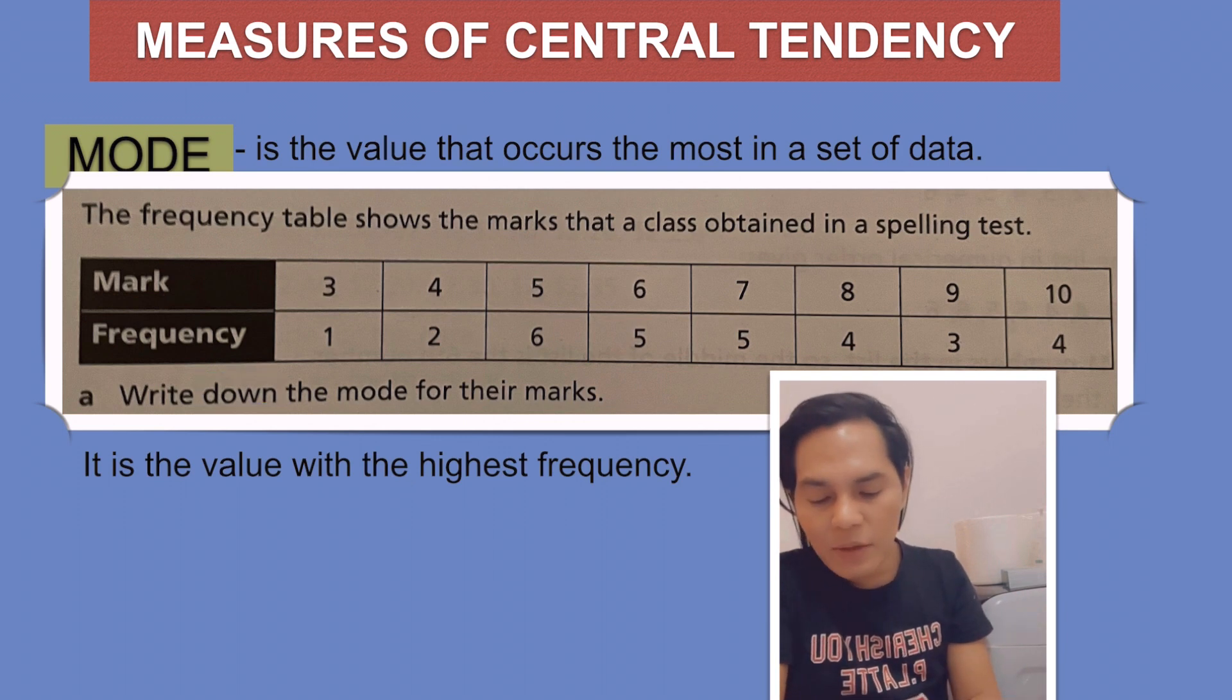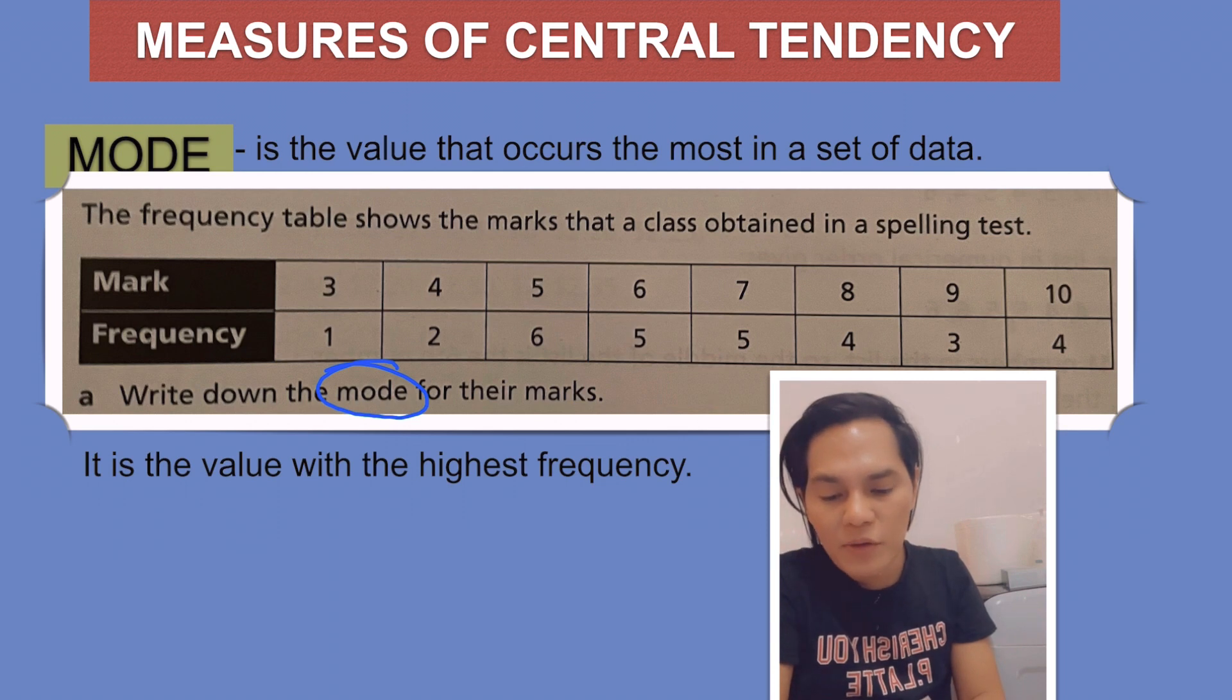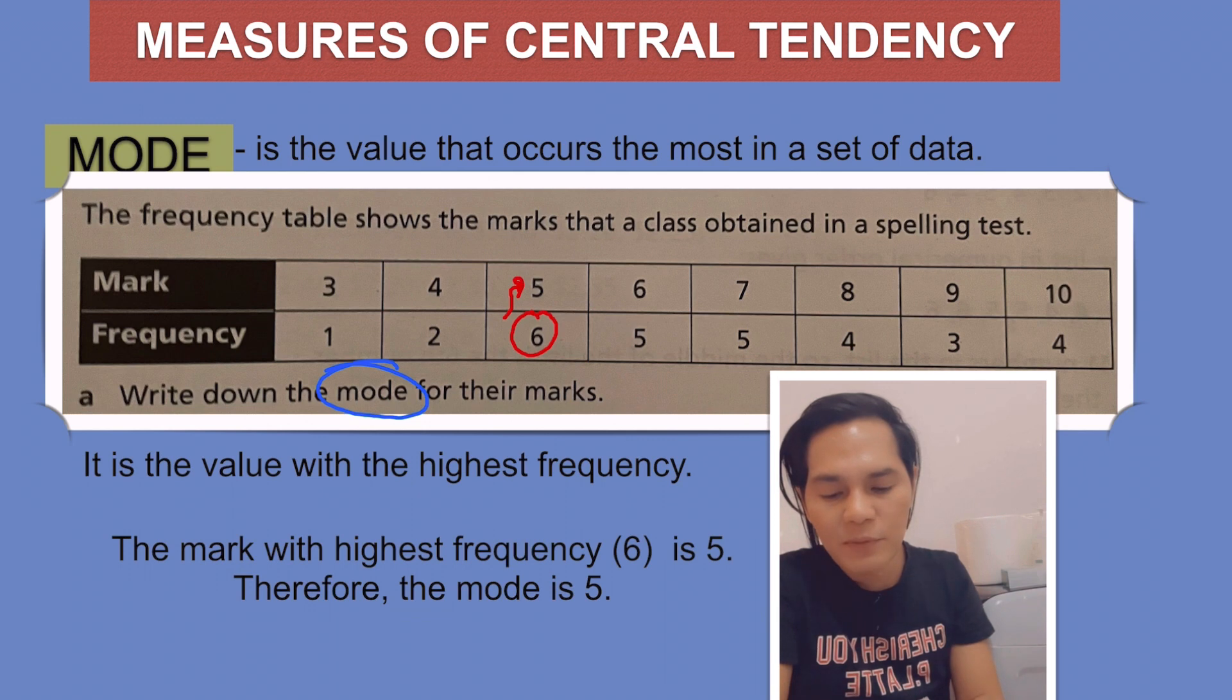So in this case, the highest frequency here is six, and the corresponding mark for that is five. Therefore, the mark with the highest frequency, which is six, means the mode is five.